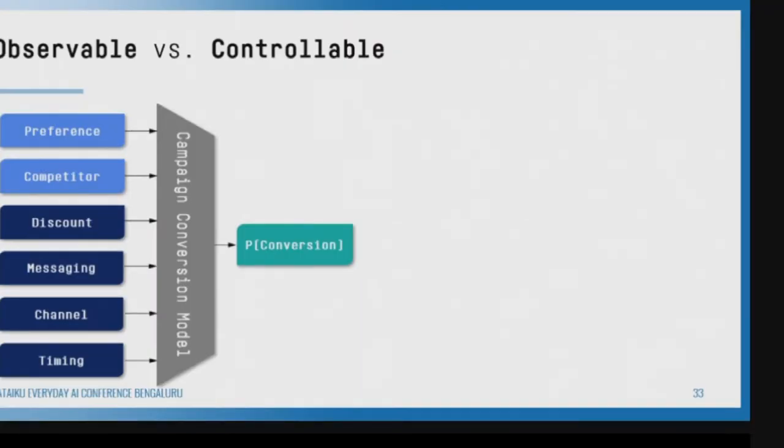For example, looking at conversion of a campaign: user preference is not something I can modify, and what the competitor is doing I can observe but not control. But what I can control is discount, messaging, channel, and timing. So we're not just building a prediction model — we're using controllability thinking to find the right combination of control variables to maximize conversion.